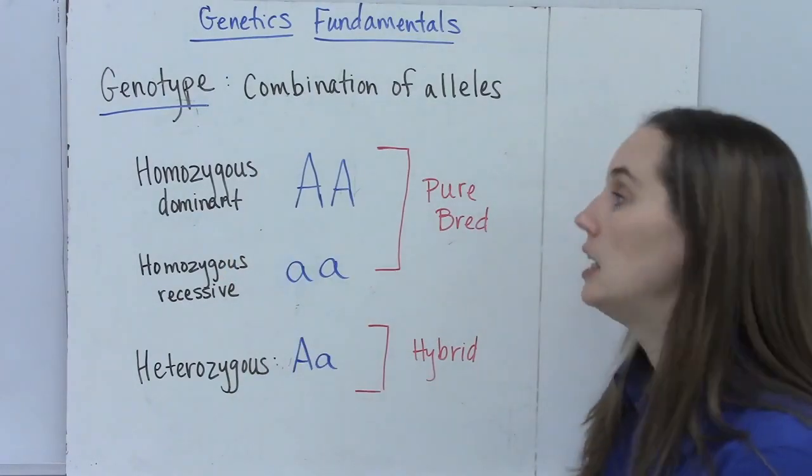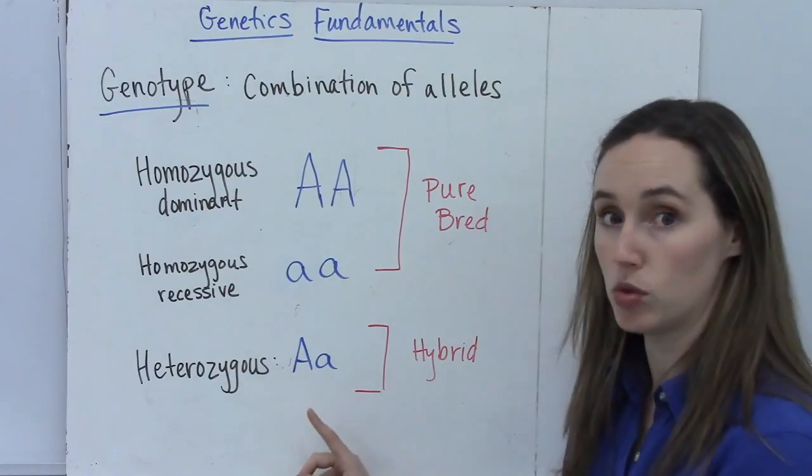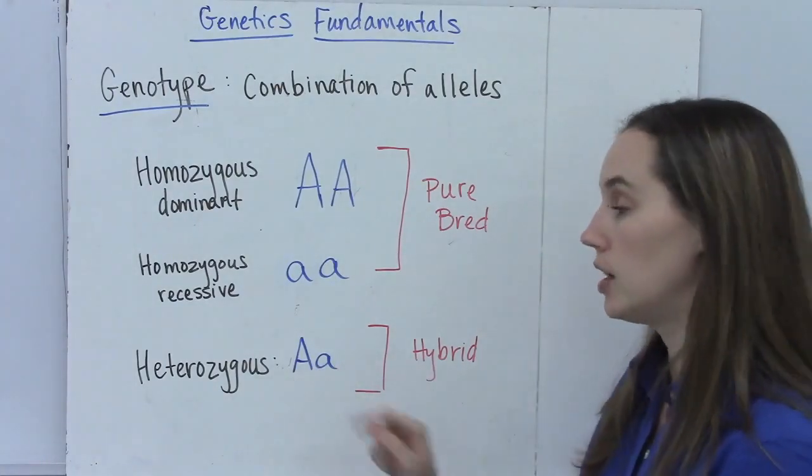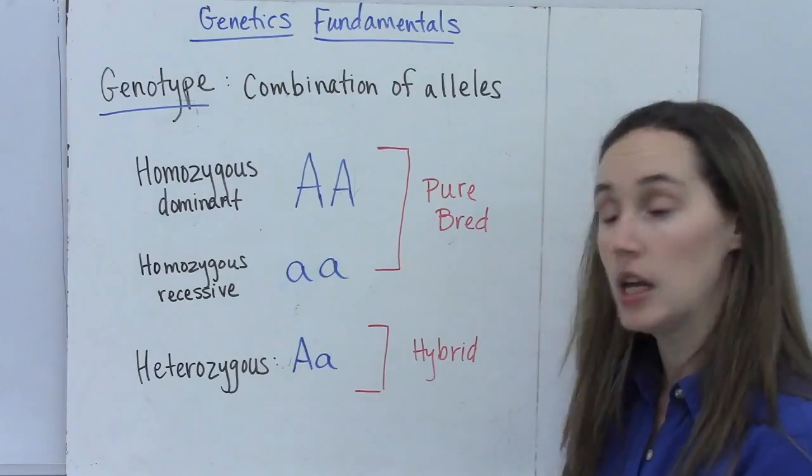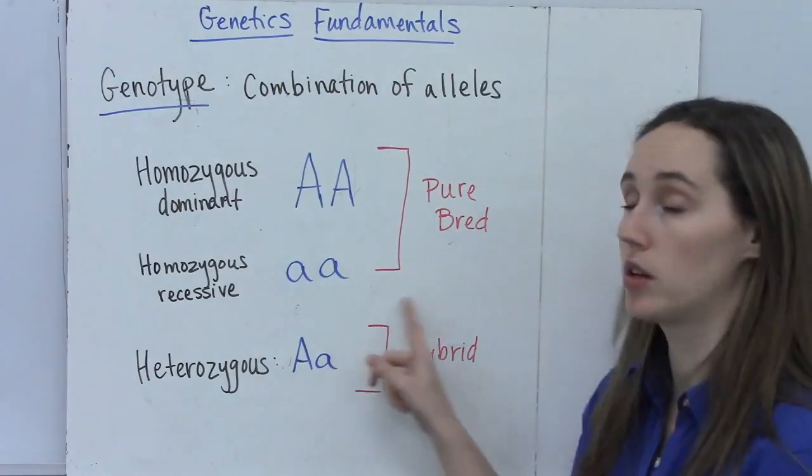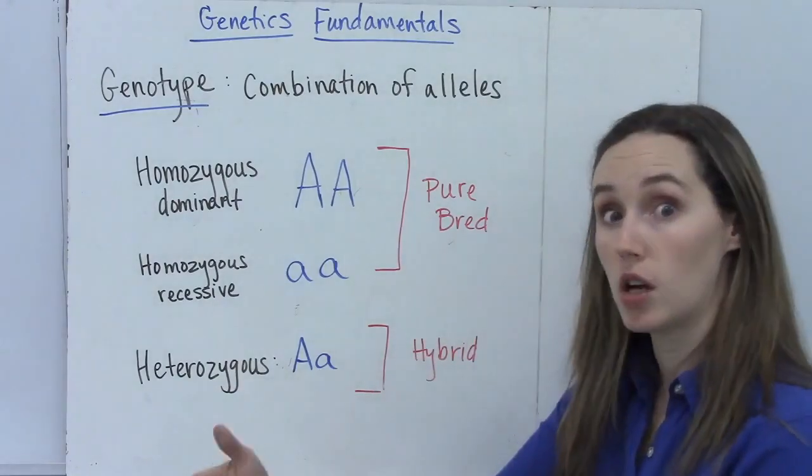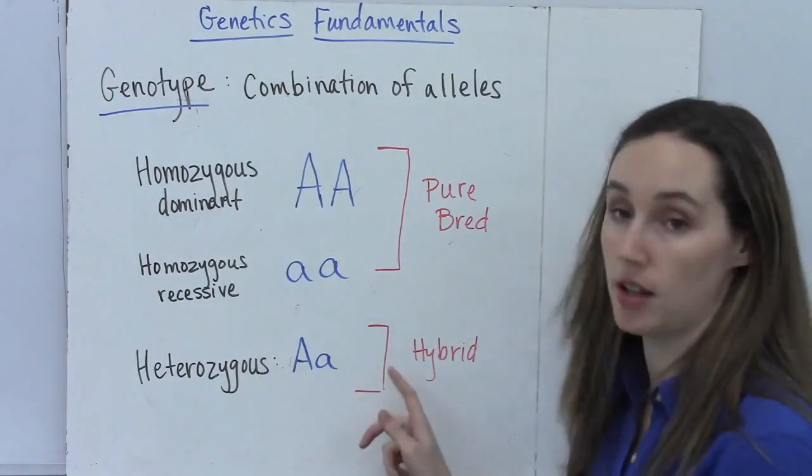On the other hand, there's heterozygous individuals. Hetero meaning different, and they have different alleles for the same gene. And so in this case we have a big A and a little a. And another word, if you ever see the word hybrid, then we know that we're talking about a heterozygous individual.